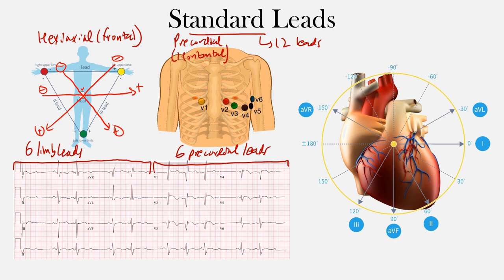Let's look at those other leads we just mentioned. Going from left to right, we have lead one here over the heart, then lead three coming down at 120 degrees at its positive end, and lead two with its positive end at positive 60 degrees. Those are the three leads we looked at.